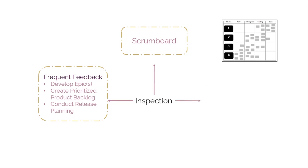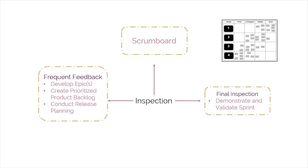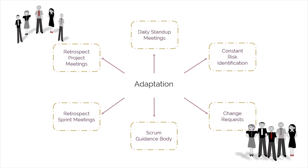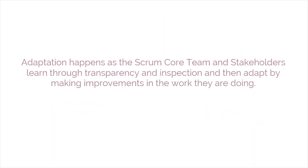The final point of inspection comes during the Review Meeting, when the team seeks approval of the deliverables by the product owner and the customer in the Demonstrate and Validate Sprint process. The third main characteristic of Empirical Process Control is adaptation. Adaptation happens as the Scrum core team and stakeholders learn through transparency and inspection and then adapt by making improvements in the work they're doing.